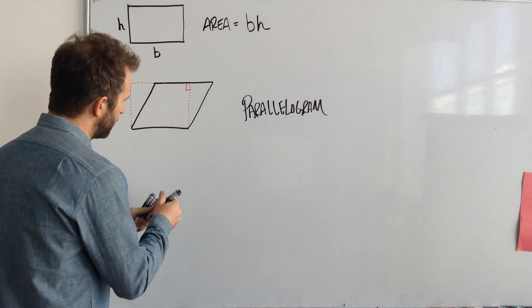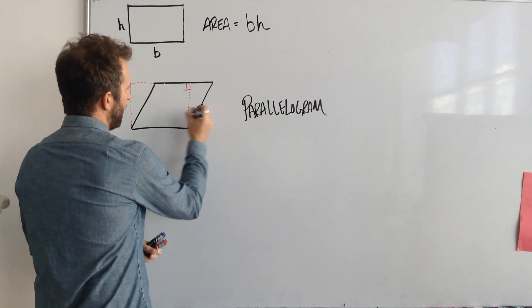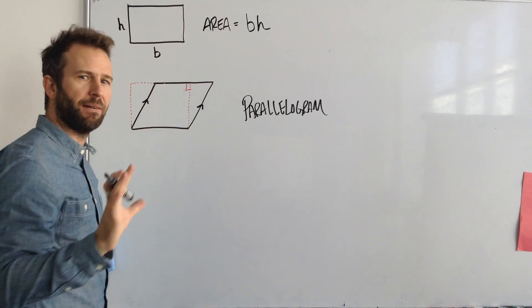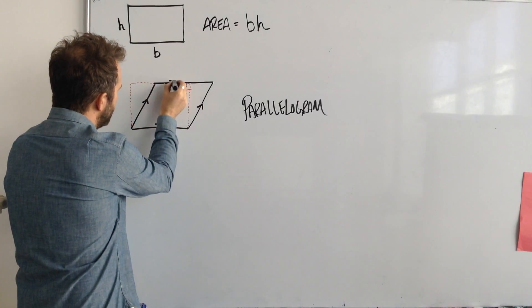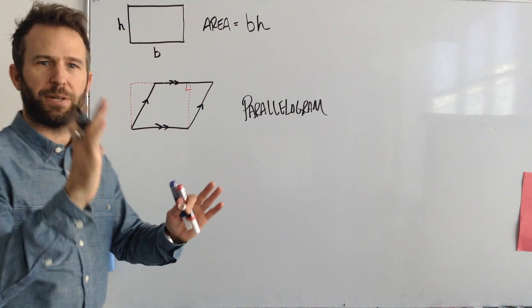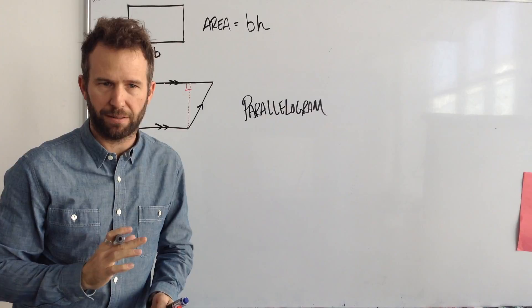And we know it's a parallelogram because this line and this line are parallel. This line and this line are also parallel, so that's what by definition makes it a parallelogram.